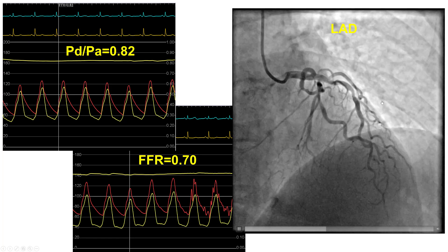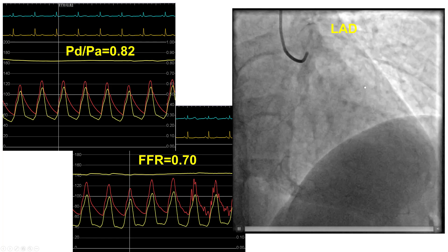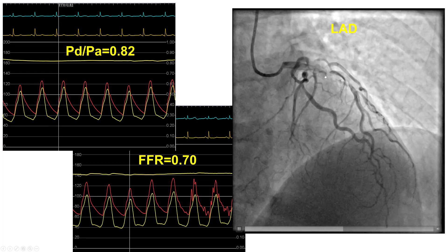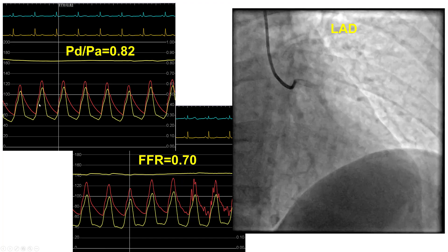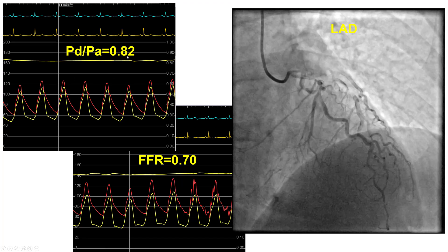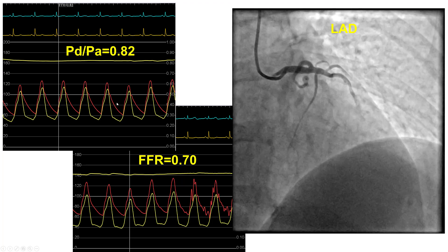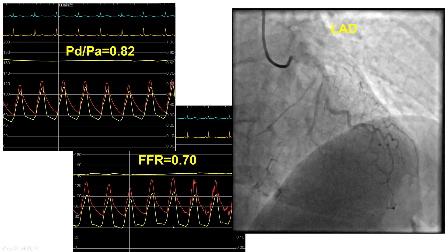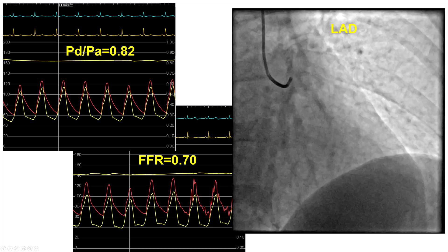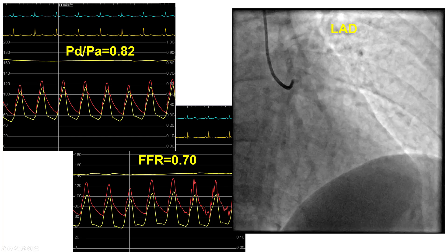We did the same for the LAD. Once again there did not appear to be a very tight stenosis, however there was disease in the proximal and mid LAD. The PDPA once again was 0.82, less than 0.91, suggesting significant stenosis, and the adenosine FFR was 0.70, essentially confirming the PDPA findings. This is illustrative of the usual correlation between the resting and the hyperemic indices. We know that resting and hyperemic indices have some difference, but about 80% of the cases the two measurements are concordant, and this is exactly what we found in this particular case.